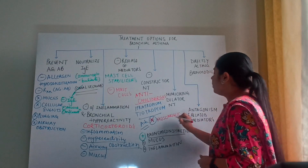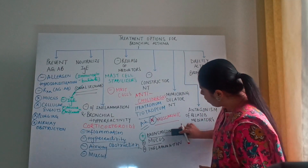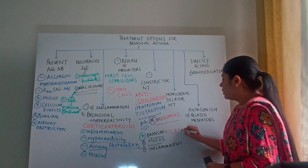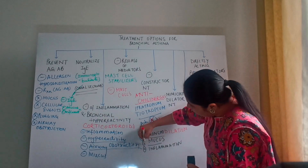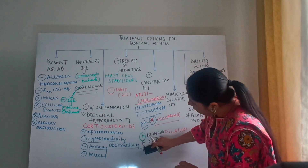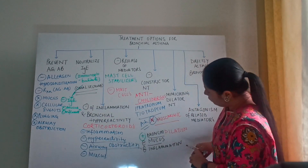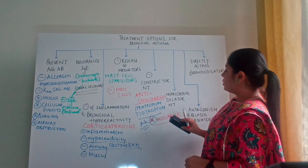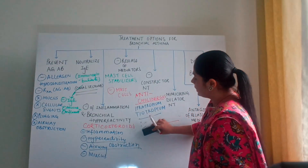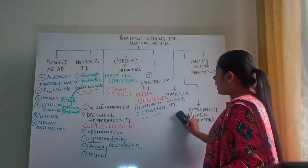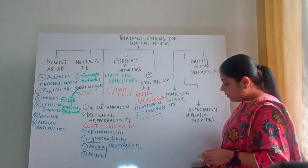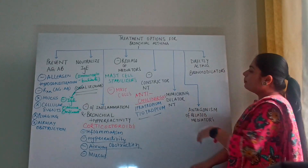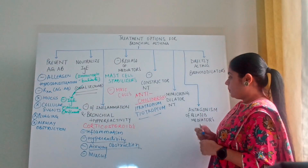When acetylcholine is inhibited, it will not bind to the muscarinic receptor. When it does not bind to the muscarinic receptor, there will be bronchodilation and suppression of mucus release and inflammation. To summarize, anticholinergics like ipratropium and tiotropium are given, therefore acetylcholine binding with muscarinic receptors will not happen.